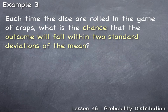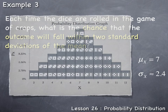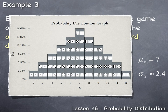In this lesson so far, we've already learned that the mean for rolling the dice in the game of craps is equal to seven, and the standard deviation is 2.4. Starting from the mean of seven, which is the balancing point of the data, we go plus or minus two standard deviations.